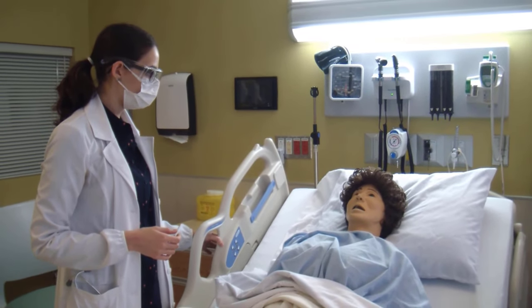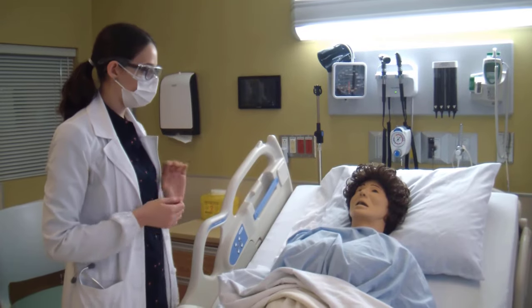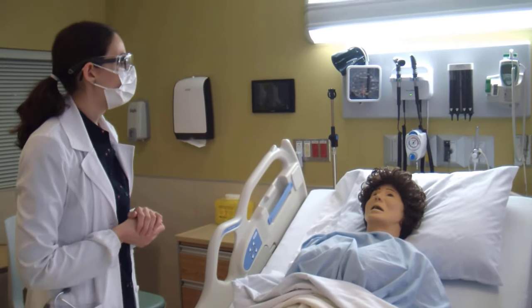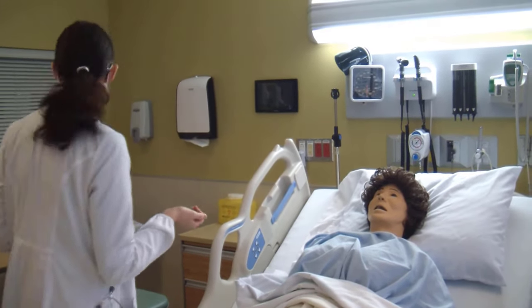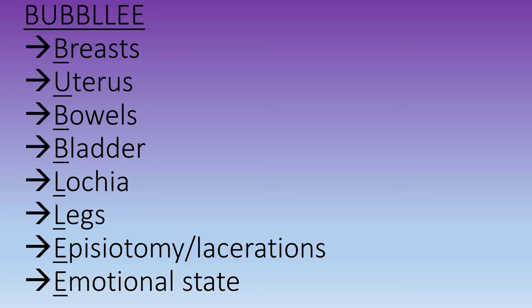I will ask my patient to lie in bed and make sure they are comfortable. The head of the bed must be flat once I examine the abdominal area. I will raise the height of the bed so that I'm comfortable and not hurting my back. In the BUBBLE-E assessment, each letter stands for a different part: breath, uterus, bowels, bladder, lochia, legs, episiotomy (which includes any type of laceration including that from a C-section), and the emotional state of the mother.